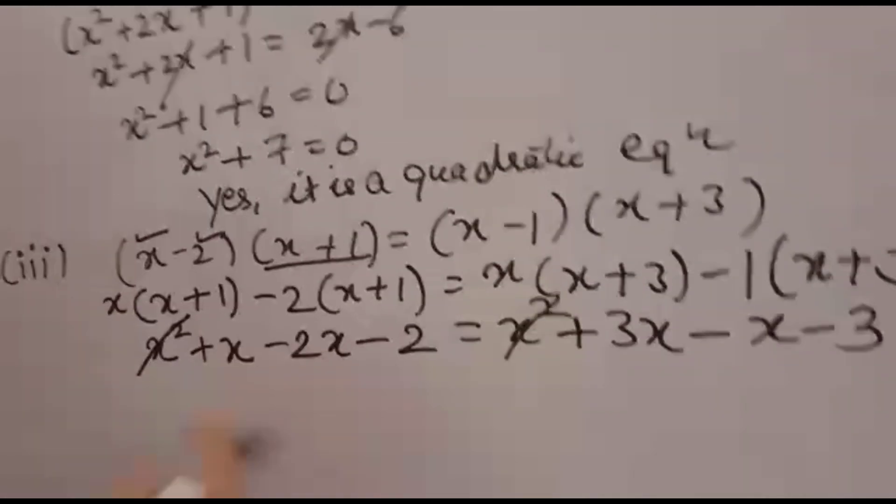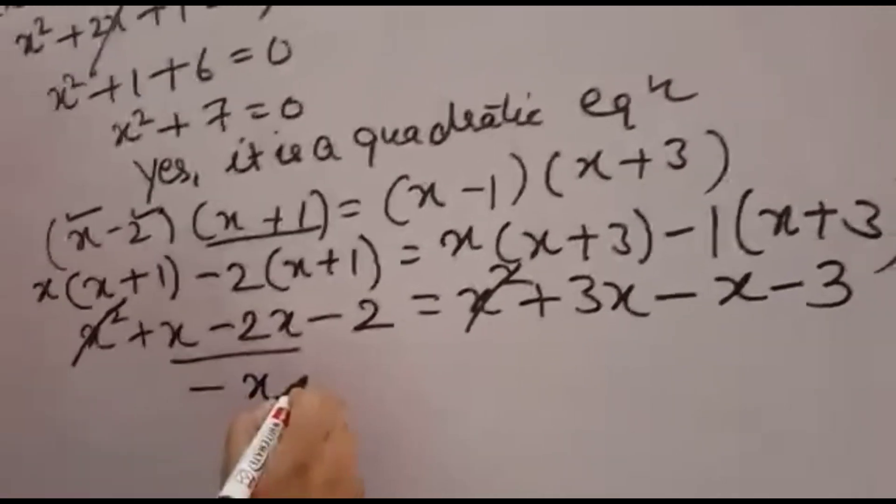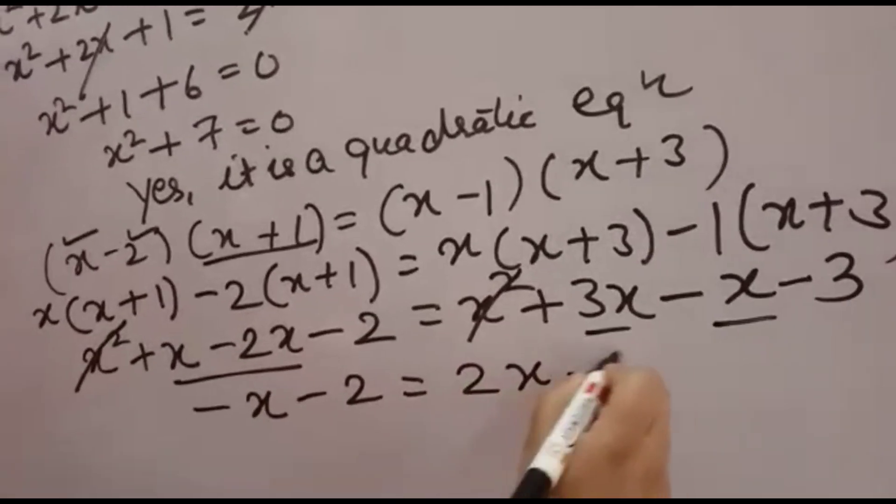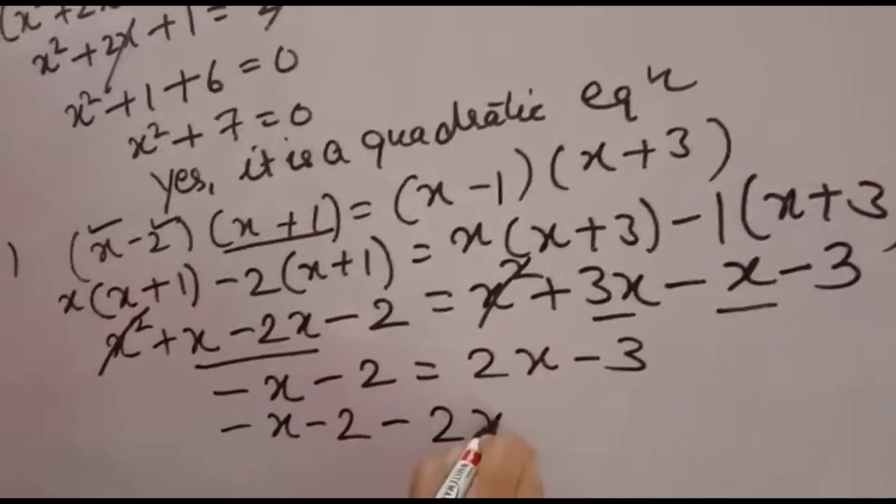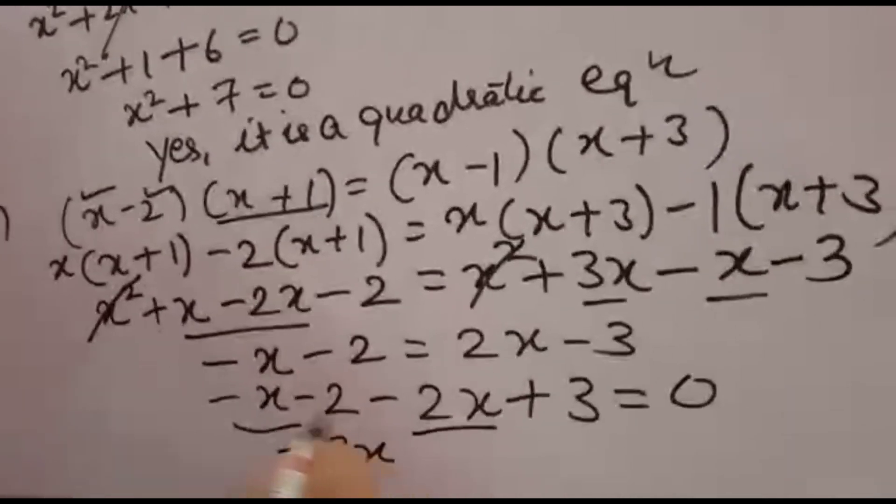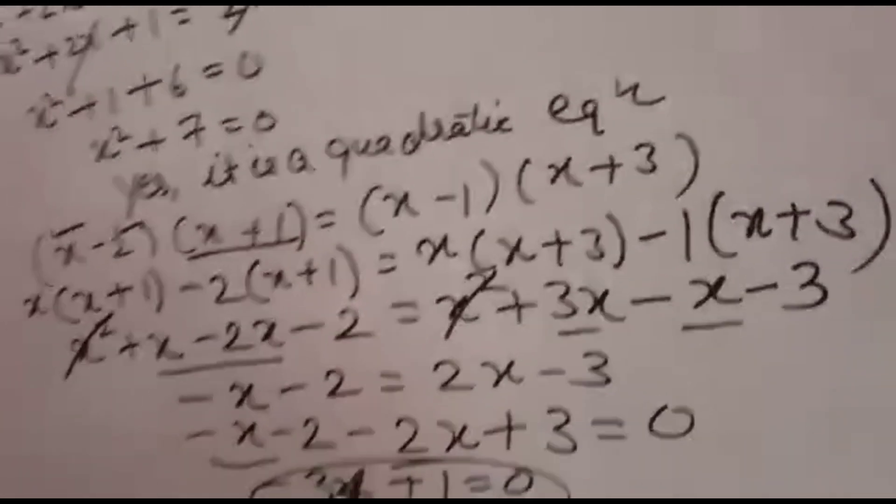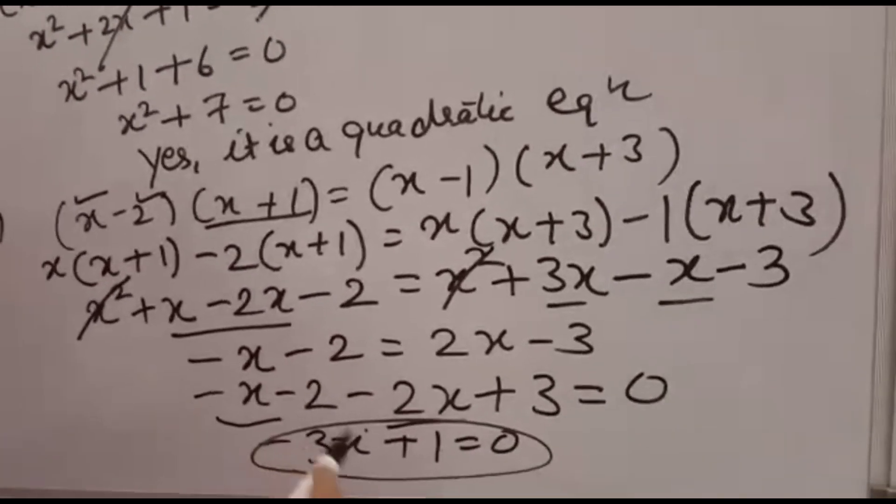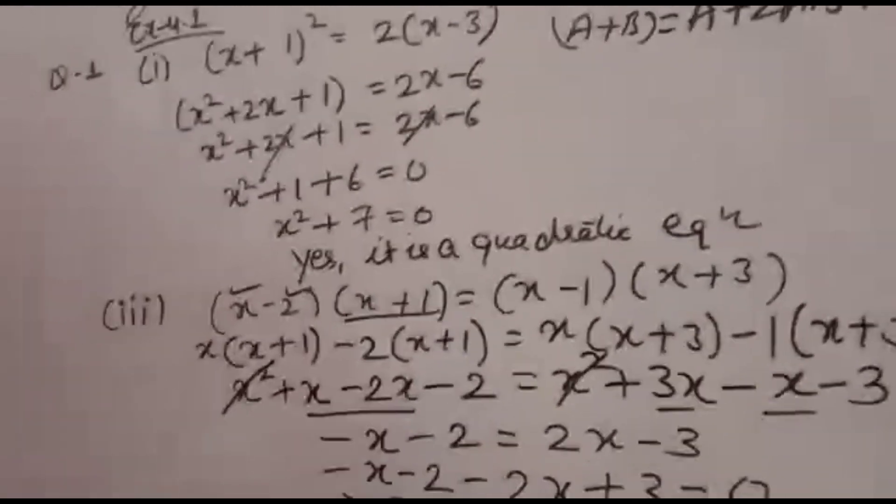Because x² minus x² is 0, so you can cancel it. Now, x minus 2x you will solve, you will get minus x minus 2. 3x minus x you will get 2x minus 3. Minus x minus 2x minus 3x, minus 2 plus 3 is plus 1. Now see, highest power of x is 1. Nothing is there, that means 1. So for quadratic equation, highest power should be 2. So what will come? No, no, it is not a quadratic equation. This will be its answer.